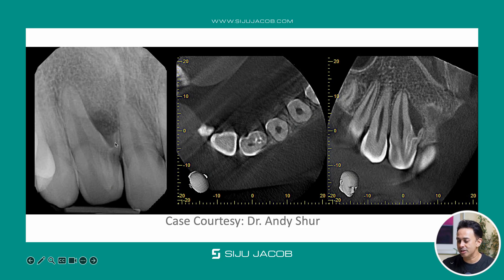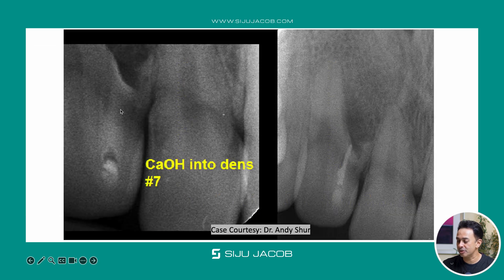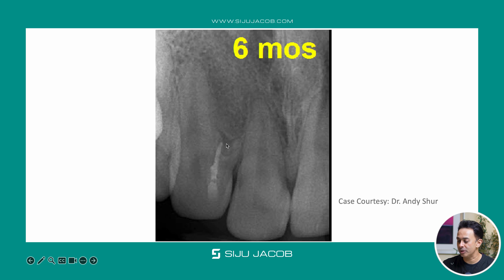This is how a type 3a case looks — you have a separate invagination but it doesn't communicate with the usual root canal anatomy. The invagination or the dens is separate from the rest of the anatomy. When this happens, the usual root canal anatomy is vital whereas the dens is responsible for a lesion many times. You can see the CBCT here; in this case, just the dens alone was treated — a small access was made into the dens, calcium hydroxide was injected, left for some time, and this is a six-month recall after obturation. You can see how the lesion responded. The rest of the canal can be left alone because the tooth will test positive to vitality.